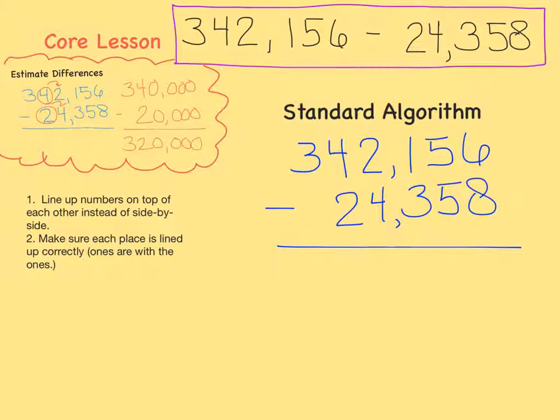Now we can start subtracting. We always start with the ones place. Here we go. 6 minus 8 equals, oh wait, we can't do that. We can't take away 8 from 6.